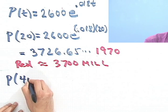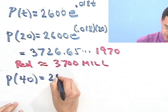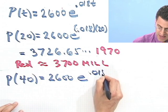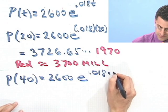Let's try another one. What does this think the population was in 1990? 1990 was 40 years after 1950. So that population would be P(40), which would be 2,600 times e to the 0.018 times 40.